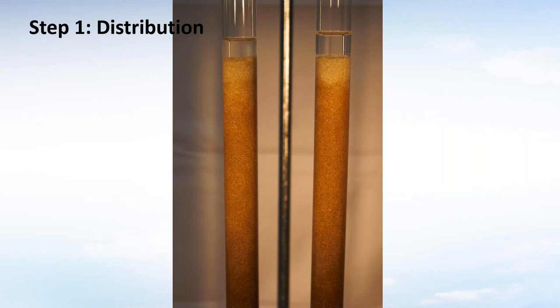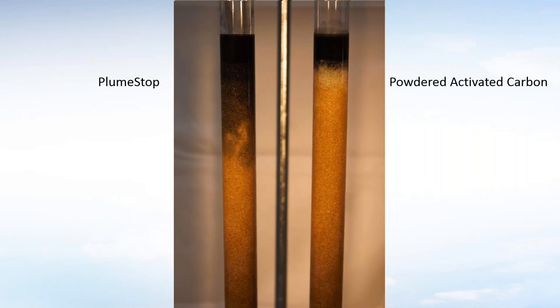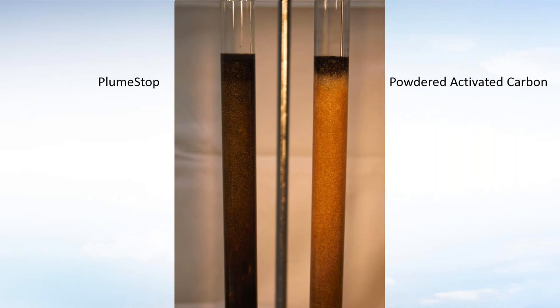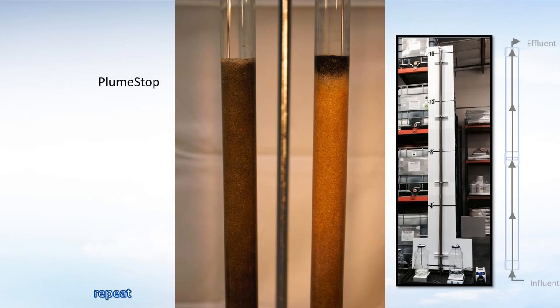In the laboratory — and this took about six years — there are a number of steps we wanted to test. The first is distribution. On the left we've got Plume Stop and on the right we've got powdered activated carbon. Powdered activated carbon might be expected to flow through the formation, but you'll see it doesn't progress because it clumps together. The Plume Stop, however, moves through the formation — you can see the colour change as it stains the formation. This is about a five-metre scale. We sliced into those columns to measure how much carbon was there, and we do get a one to two micron coating of the formation without affecting permeability.